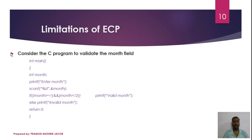Now, let's consider this C program in the validation field. If the month is greater than or equal to 1 and the month is less than 12, it will be a valid month; otherwise it will be an invalid month.